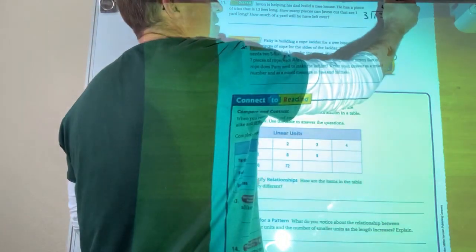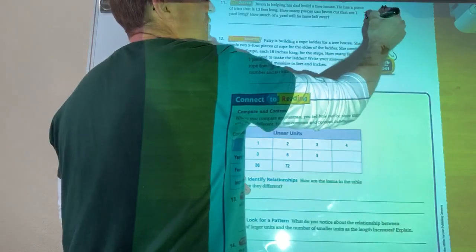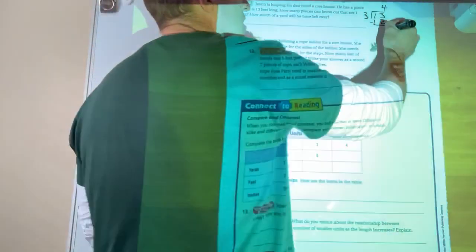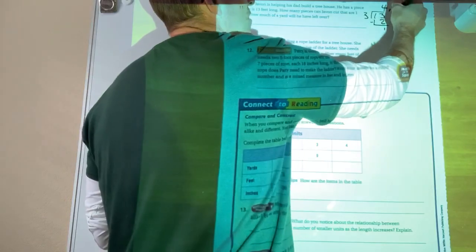How many threes can I take from 13? Four, right? Good. So four times three is 12. 13 minus 12 is, of course, that's easy, one.